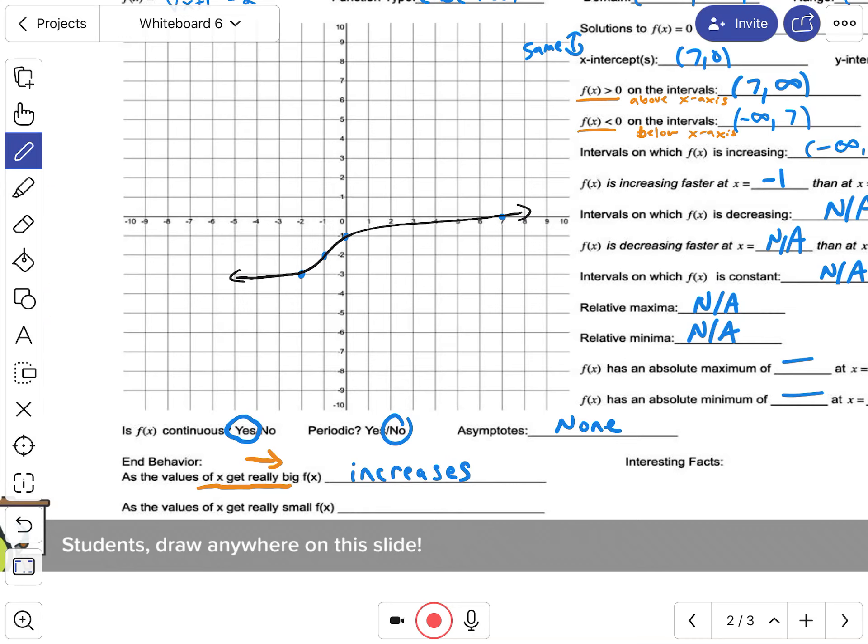And then this last one: as x gets really small, that means the x value is negative, which means it's going to the left. So as you go to the left, what's the y value doing? What's the f(x) doing? Well, it's going down, so that's going to be decreases.